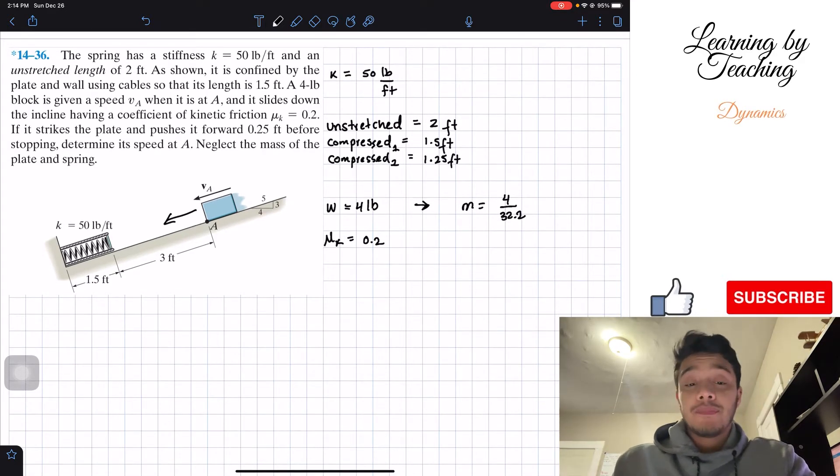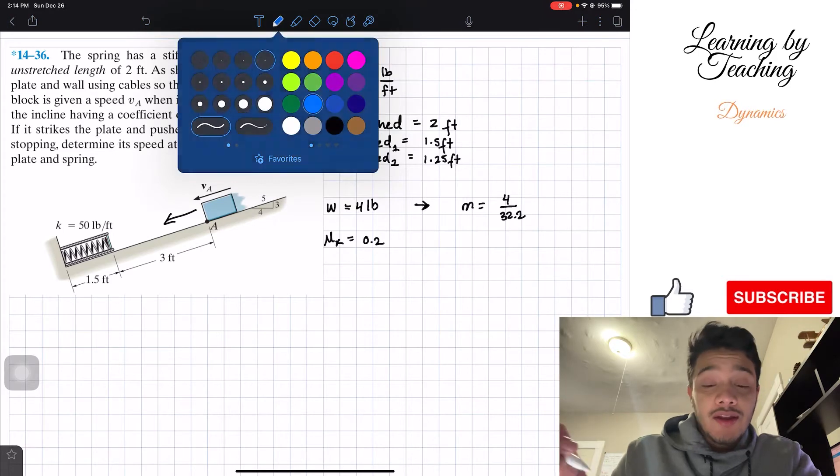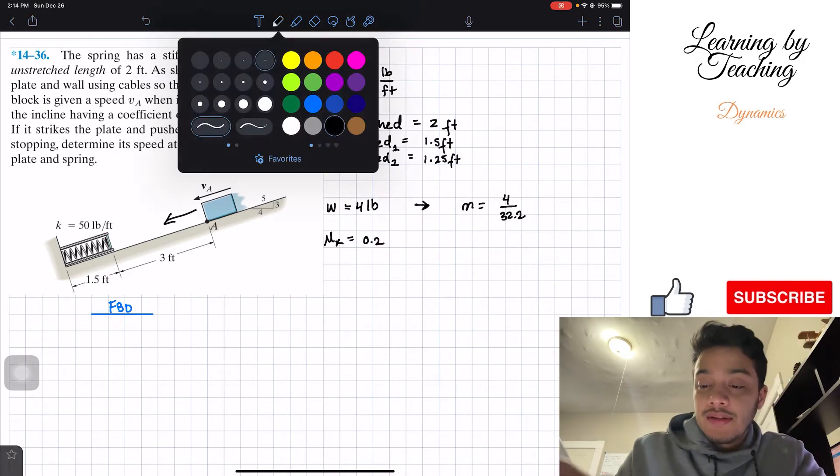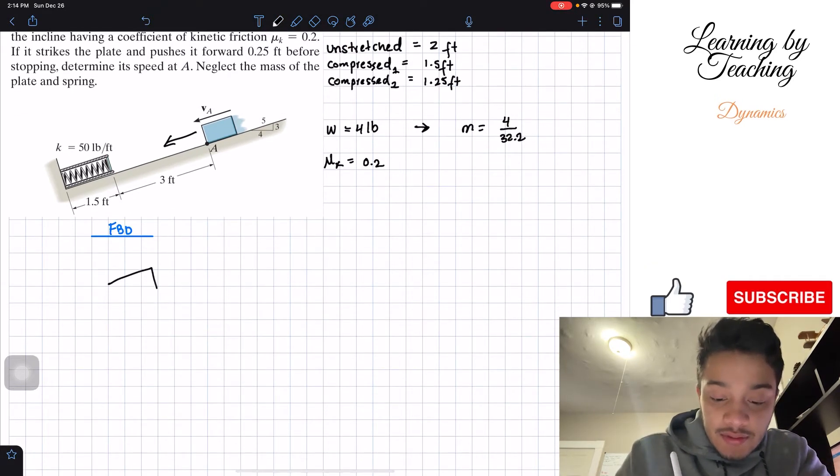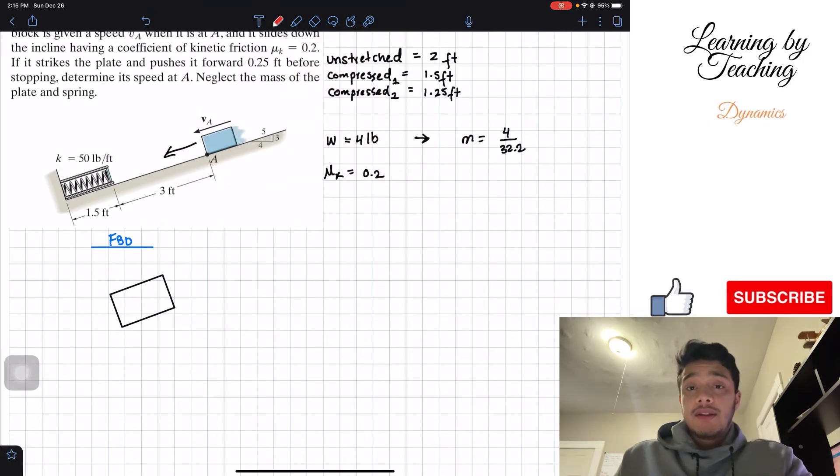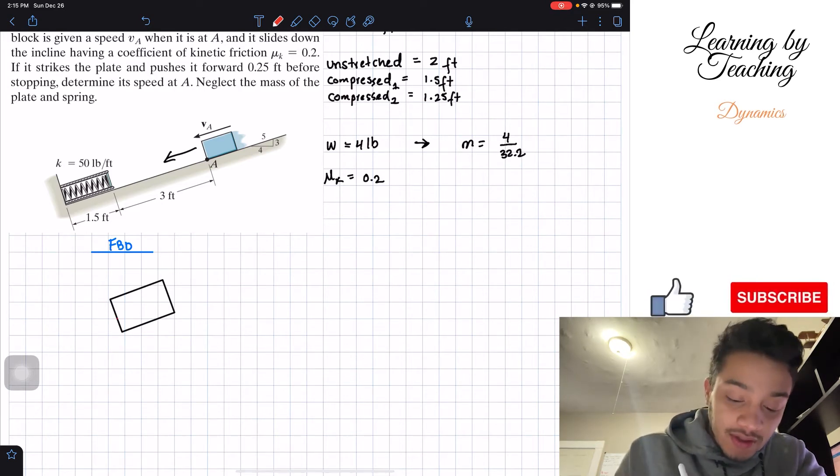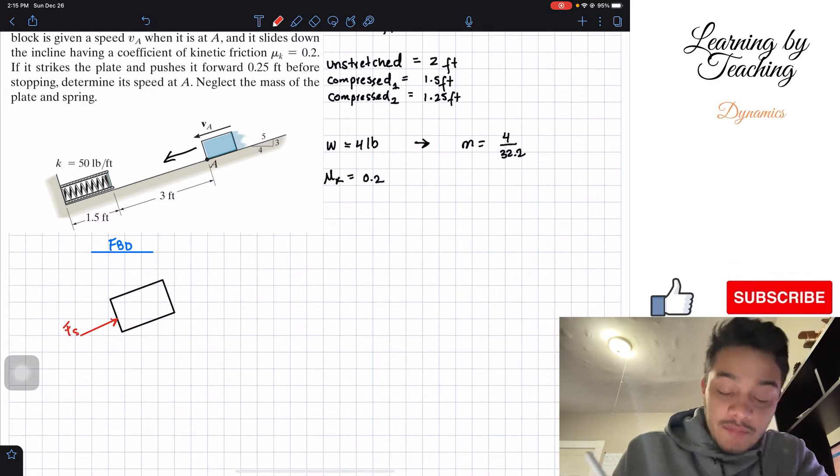So after we wrote basically our givens, let's go ahead and do a free body diagram. Like in any of these problems, mainly all of them need a free body diagram. Alright, so we have our block. Now we're going to do this free body diagram when the block is already before stopping, meaning that the spring is already in contact. And the spring will want to push my block in this direction. So I'm going to call this one my F_S, force of the spring.